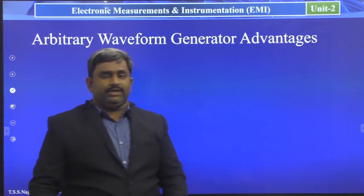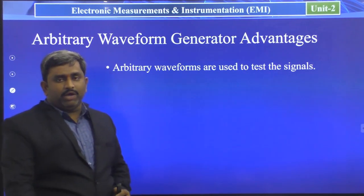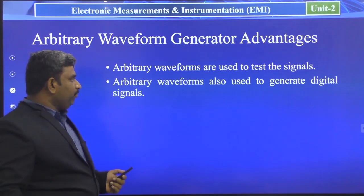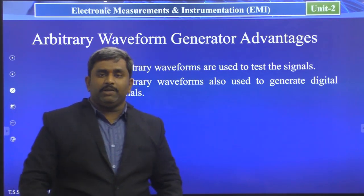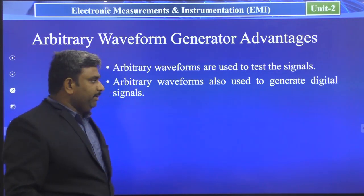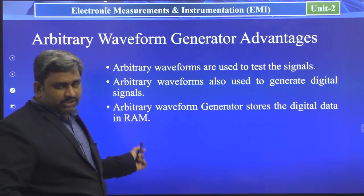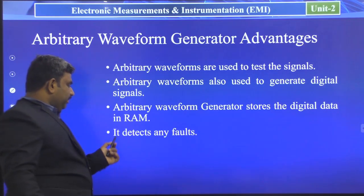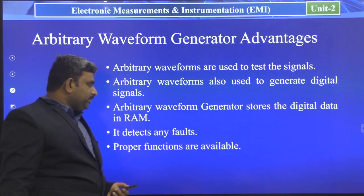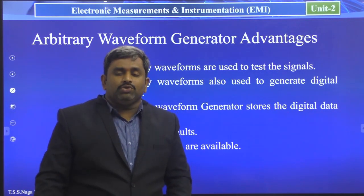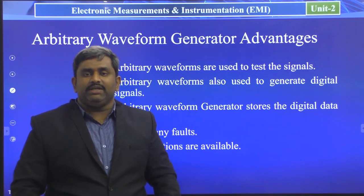The advantages of the arbitrary waveform generator: first, it is generally used for testing signals and electronic equipment. Second, it is used to generate digital signals, which are converted to analog information and passed through a low-pass filter and amplified. Third, the arbitrary waveform generator stores digital data in RAM. It can detect any type of fault. Proper functions are available — you can predefine the signals or generate different types of signals spontaneously based on your requirement.